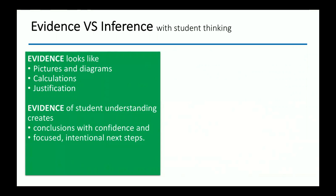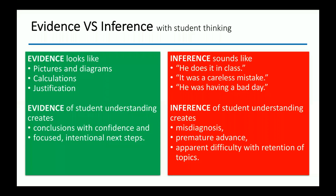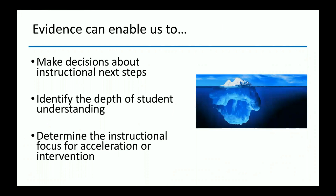When I use evidence — pictures and diagrams, calculations, and justifications, maybe through discussion, maybe through writing — I can make conclusions with confidence and have focused next steps. But when we infer, it can lead to things like: 'He does it in class,' 'Oh, it was just a careless mistake,' 'He was just having a bad day.' Inference can create misdiagnosis, or advancing a student before they have a sound understanding of the concept. It may lead us to suspect difficulty with retention of topics, when really they never had a firm grasp. So today I'd like to identify what is evidence, how evidence enables decisions about next steps, and how evidence helps us determine instructional focus for acceleration or intervention.